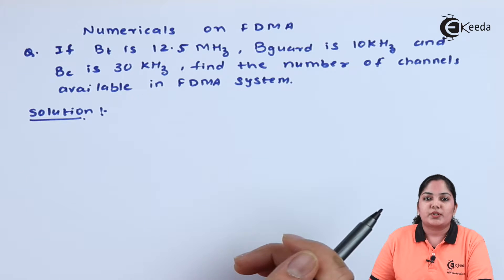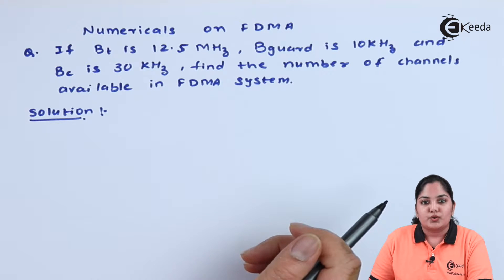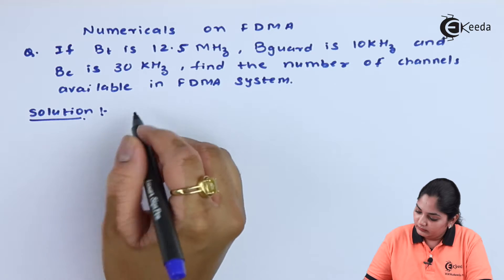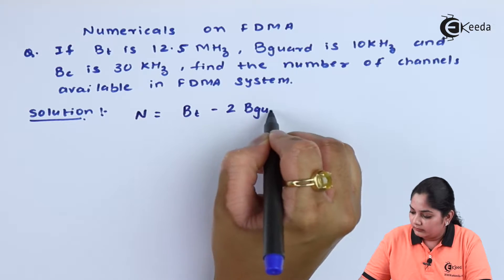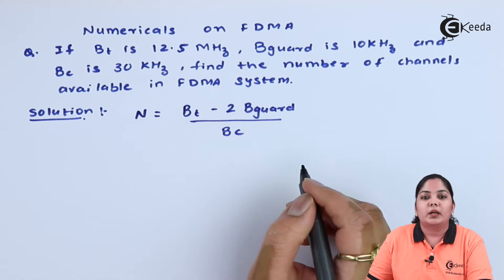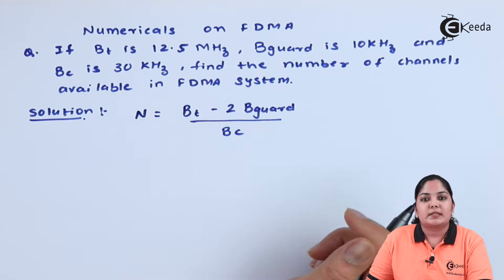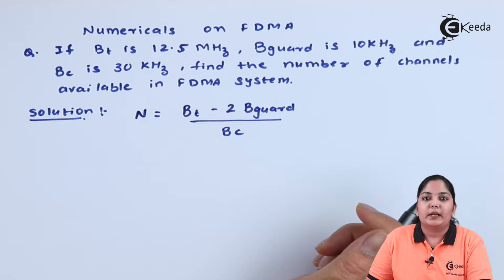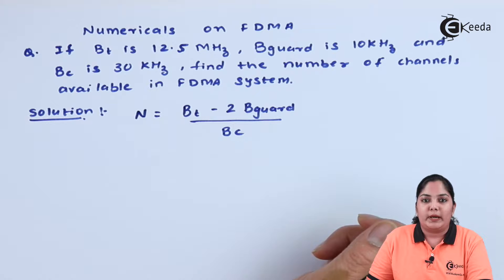In this question, we have been asked to find the number of channels that this system is going to provide us. The formula is as follows: the number of channels is given as the total bandwidth minus twice the guard band, divided by the individual channel bandwidth.